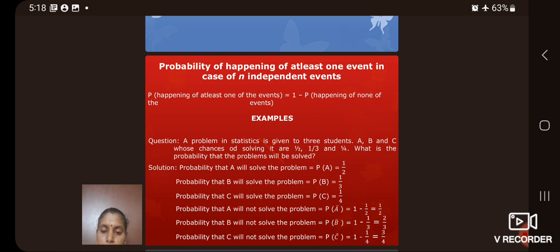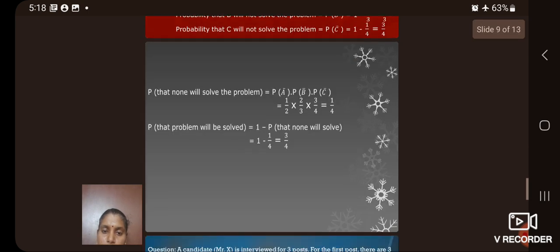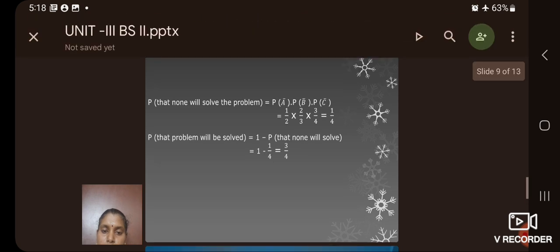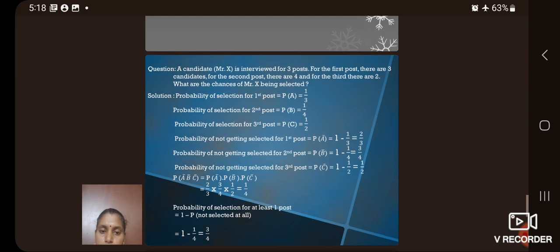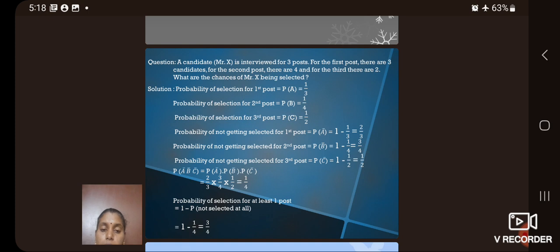Now, here P of A equal to 1 by 2, P of B 1 by 3 and P of C equal to 1 by 4. Calculating P of A bar equal to 1 by 2 and P of B bar equal to 2 by 3 and P of C bar equal to 3 by 4. That is probability that none of these solve equal to 1 by 4. Then probability that the problem will be solved equal to 1 minus 1 by 4 that is equal to 3 by 4.